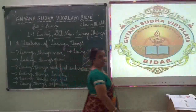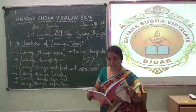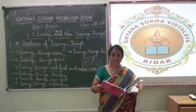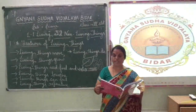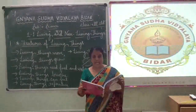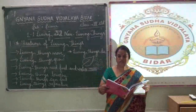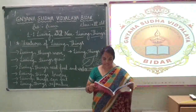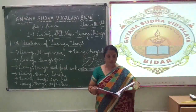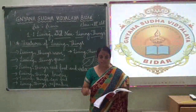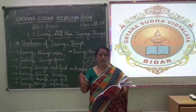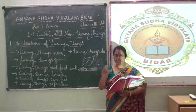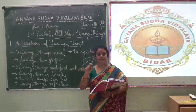Next: living things reproduce. In order to maintain continuity of life, it is essential that all creatures produce their own kind. Animals such as cats, dogs, and cows give birth to their young. Birds lay eggs and the young hatch out from these eggs. Plants reproduce by producing seeds. These seeds germinate and grow into a new plant. Reproduction means maintaining the continuity of life.